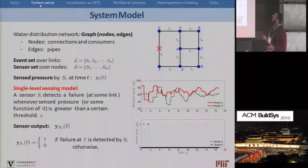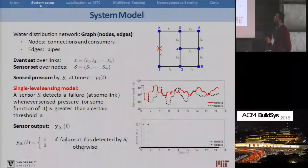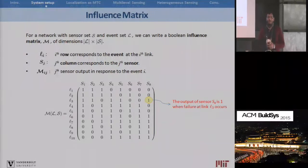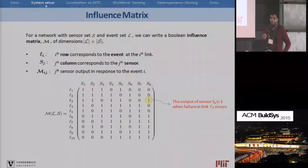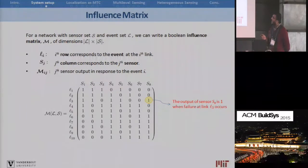Here we have a simple network where there is some kind of burst or leakage that happened on link L1, and this is the raw pressure data collected from sensors deployed at nodes two and five. The pressure drop at a certain time instant is greater than a certain threshold, indicated by the value of one. To capture the effect of these failure events on the sensors, we write a boolean influence matrix in which the rows represent pipe failure events and the columns represent sensor outputs, and the (i,j)th element reveals what would be the output of sensor j if event i happens.